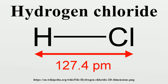Upon contact, H2O and hydrogen chloride bind to form hydronium cations H3O+ and chloride anions Cl− through a reversible chemical reaction: HCl + H2O ⇌ H3O+ + Cl−. The resulting solution is called hydrochloric acid and is a strong acid.